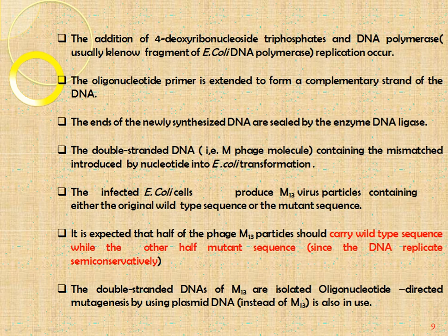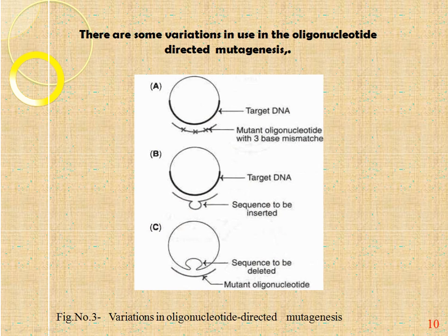The double-stranded DNA of M13 is isolated; oligonucleotide-directed mutagenesis using plasmid DNA is also in use. Variations in the technique include: instead of one base mismatch, a three base mismatch can be used; insertion of sequence — adding some sequence in the primer; and deletion of sequence in the mutant oligonucleotide.